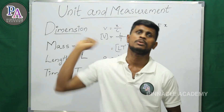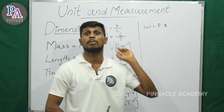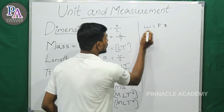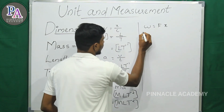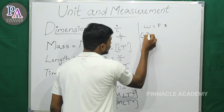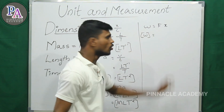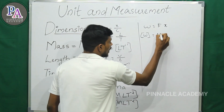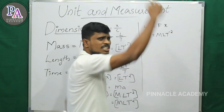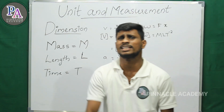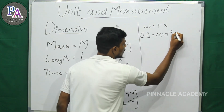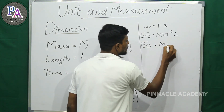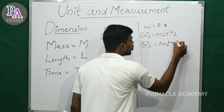We work with force and displacement to find the dimension of work. The dimension of work W is equal to the dimension of force — M L T raised to minus 2 — multiplied by the dimension of displacement, which is L.